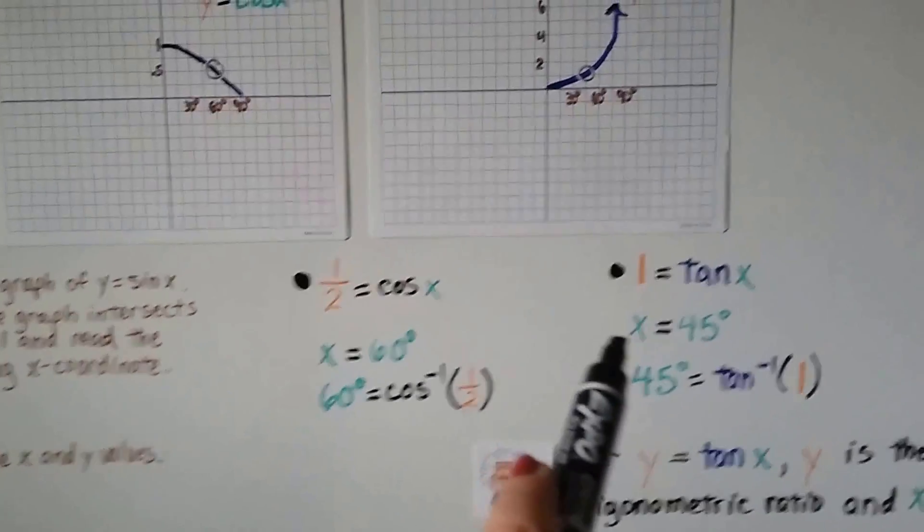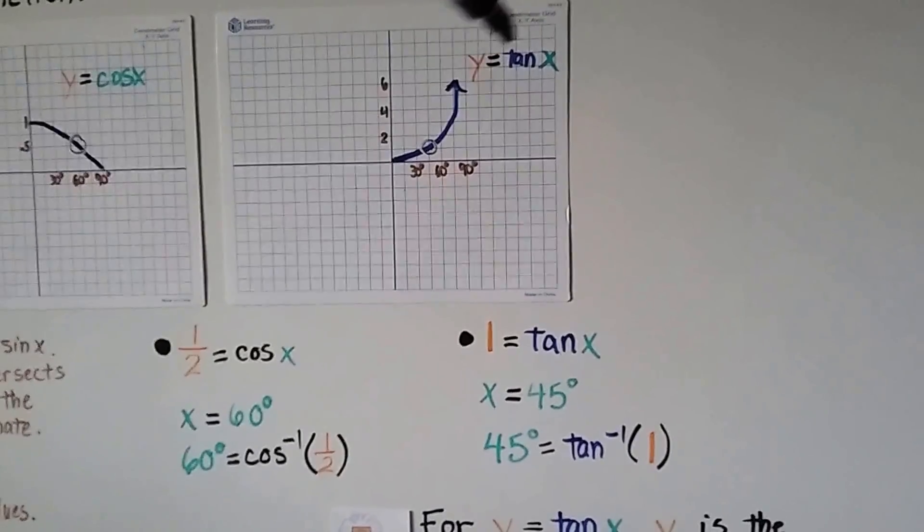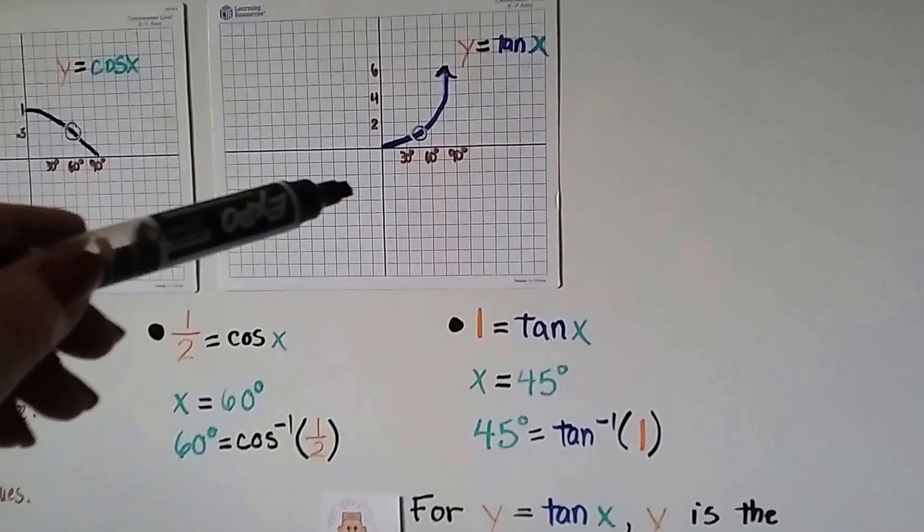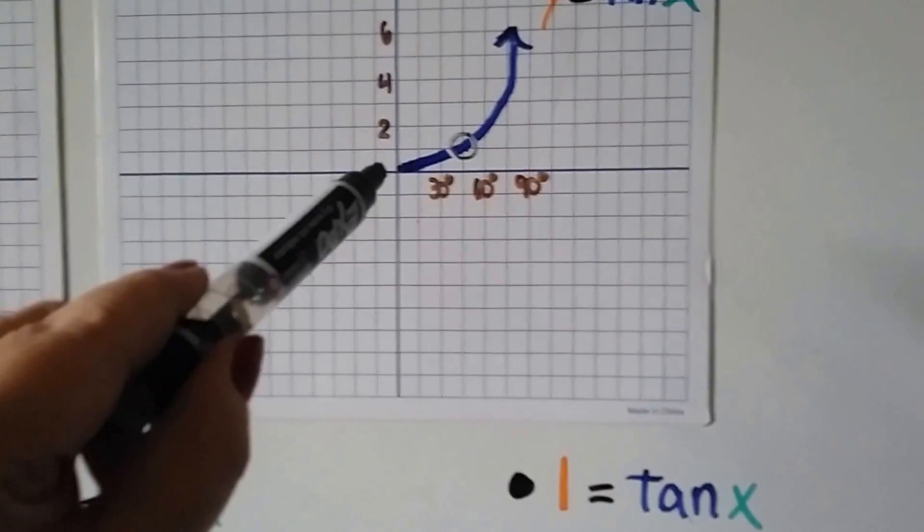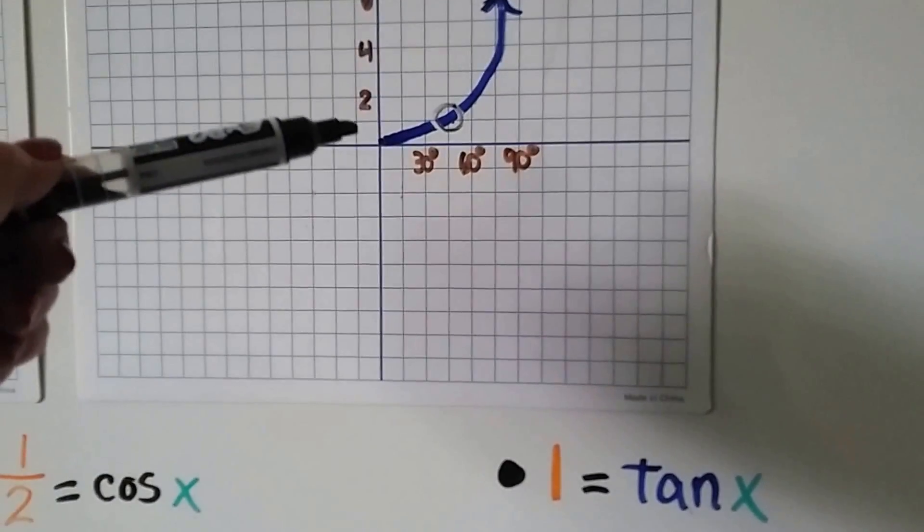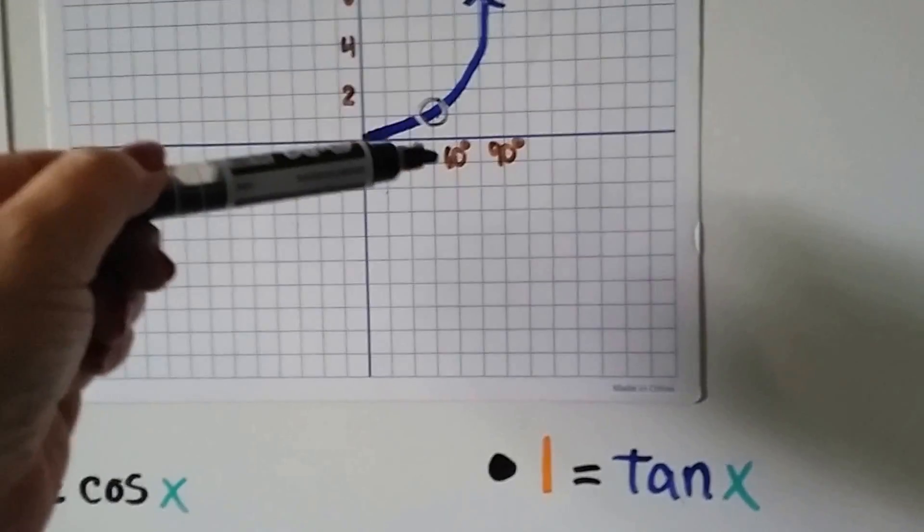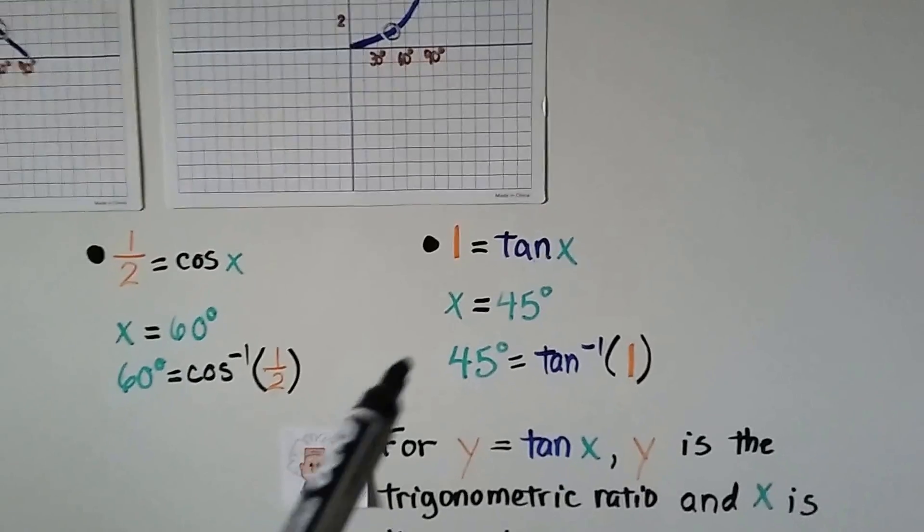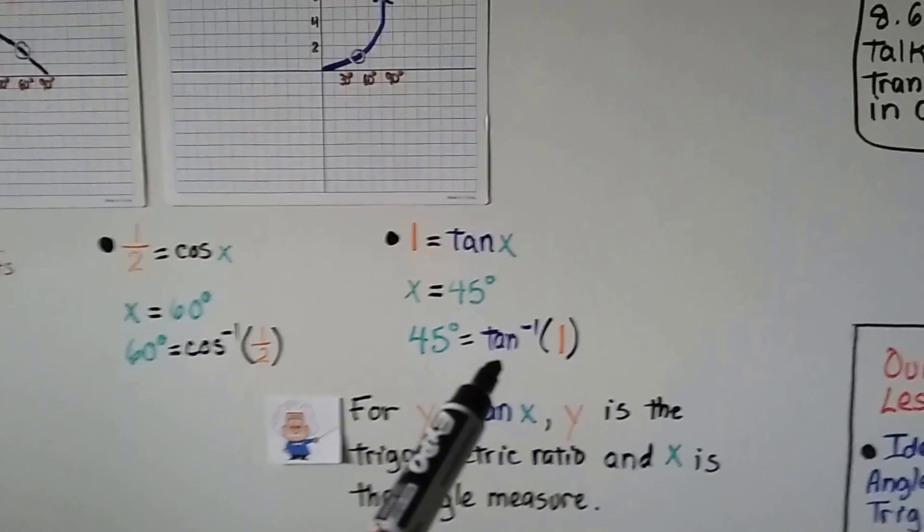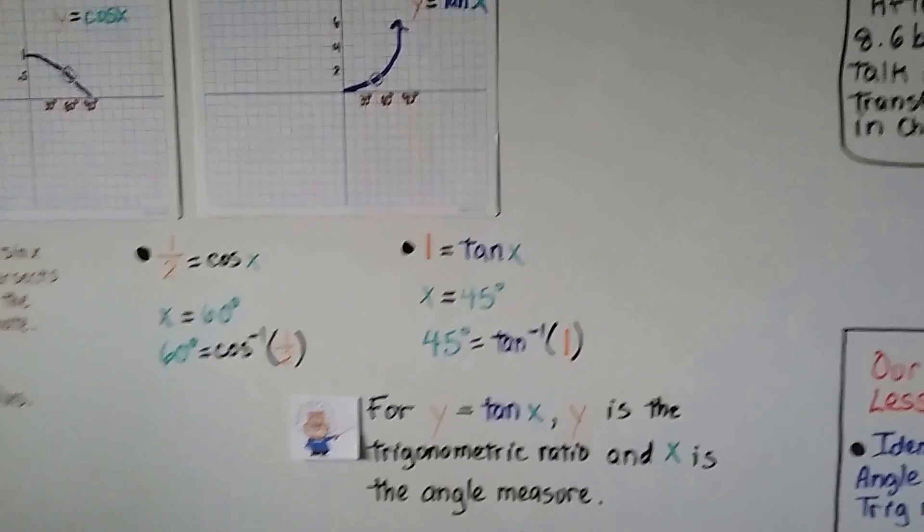Here we have 1 equals the tangent of x. We look at our graph that has y equals tangent of x. We look at where the y value is a 1. This one right here is the 1. And it's right here. And the corresponding x value is a 45. It's in between there. It's 45 degrees. So, we have 45 degrees equals the inverse tangent of 1.